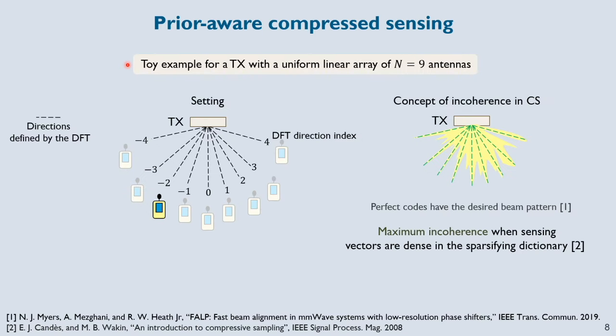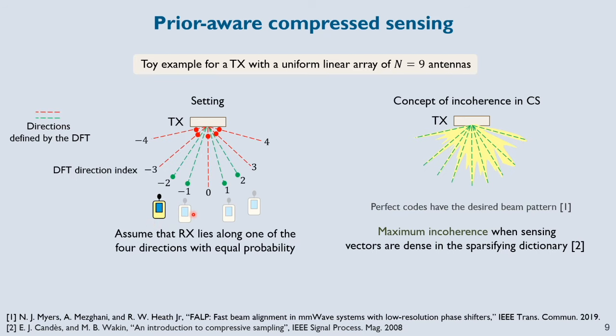I will now give some intuition into the design of compressive beamforming vectors under side information. Let's take a simple direction of departure estimation problem where the transmitter has a linear array of 9 antennas. For simplicity, we assume that the receiver lies along one of the 9 directions defined by the DFT. The notion of incoherence in compressed sensing tells us that a good compressive beam is one that has equal gain along all these 9 directions. Now, what if the receiver is assumed to lie along the 4 directions shown here with equal probability? In this case, a good compressive beam is not the yellow one but the green one shown here.